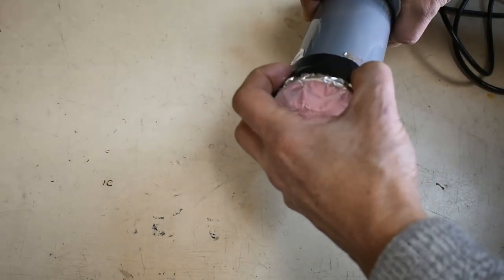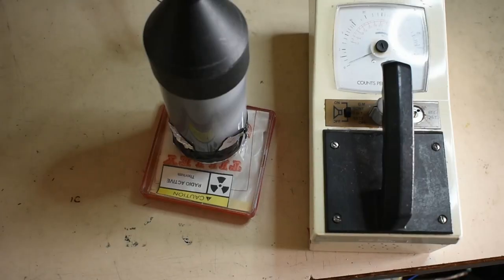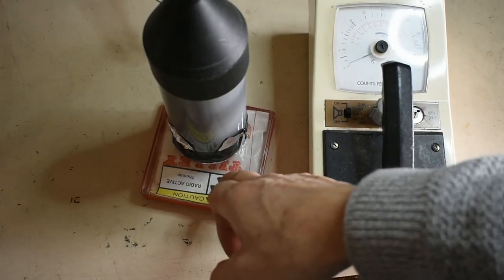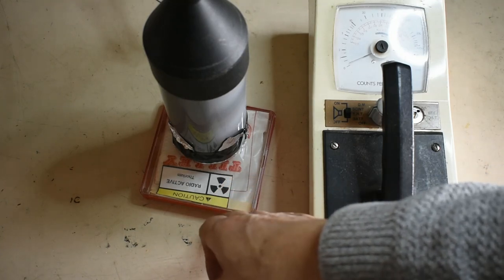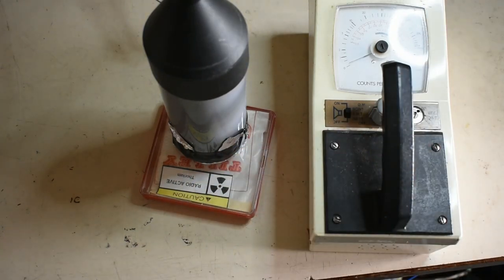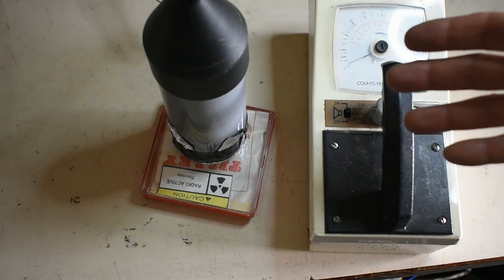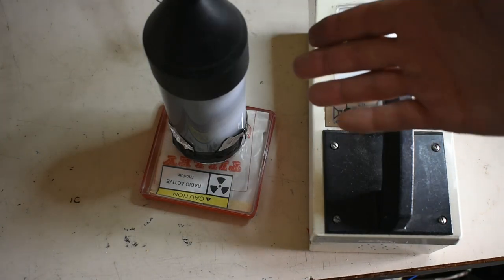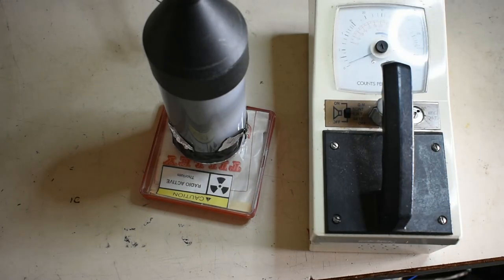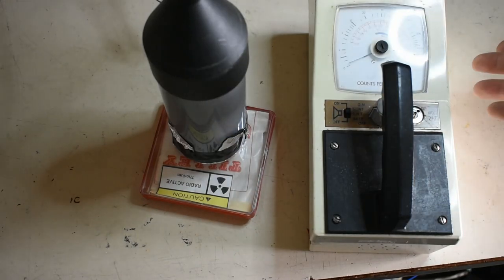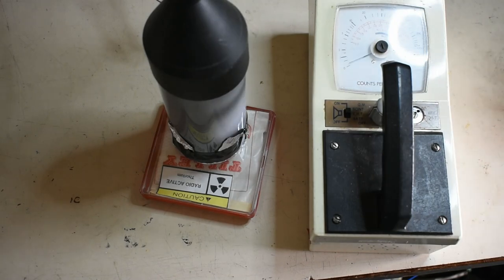I've got it now sitting on a source, which is basically a gas mantle with some thorium in there. There's no scintillating crystal or anything, and there's no light getting into the photomultiplier. We're sitting at 900 volts and the Geiger counter is silent, as we'd expect.